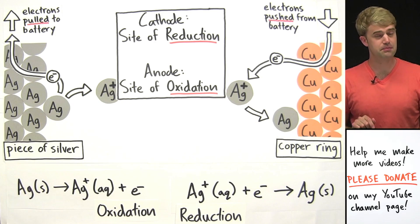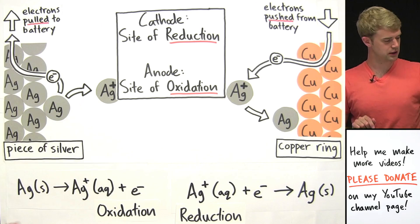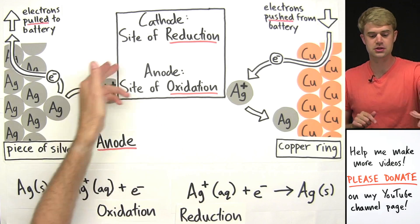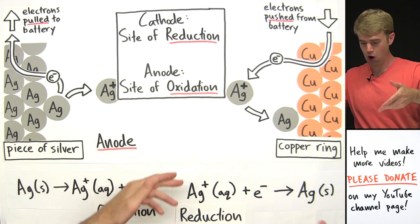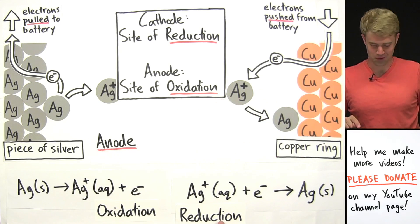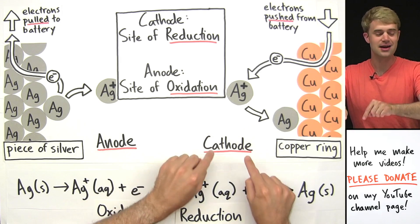So over here on the piece of silver, these neutral silver atoms are losing electrons, oxidation is taking place, so the piece of silver is the anode, the site of oxidation. Over here, these Ag1 plus ions are gaining electrons, reduction is taking place, so the copper ring is the cathode.